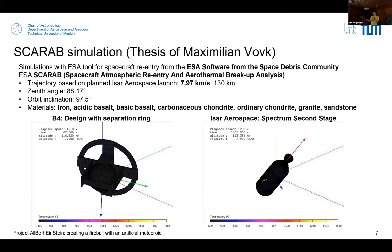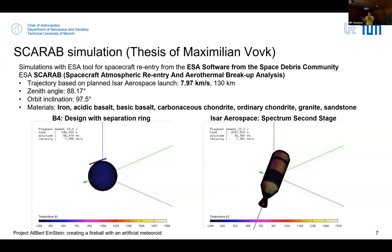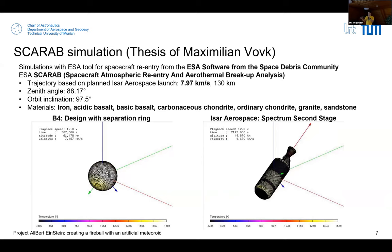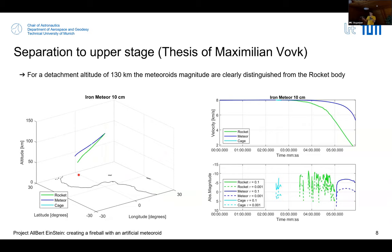We have used the ESA software from the space debris community called SCARAB, which stands for Spacecraft Atmospheric Reentry and Aerothermal Breakup Analysis. The initial conditions we used are given by our orbital stage, with a velocity of 8 kilometers per second at 130 kilometers altitude, which corresponds to the second stage re-entry. We tested with seven different materials.